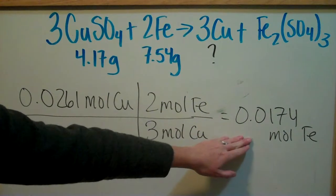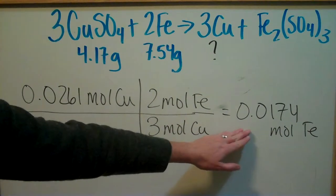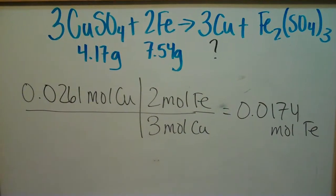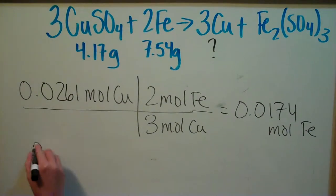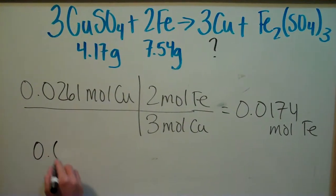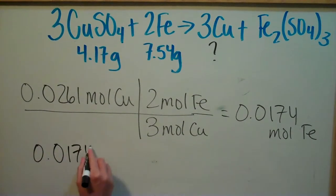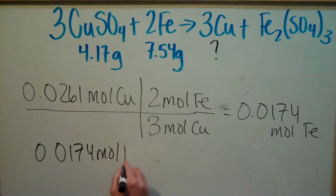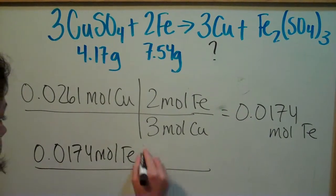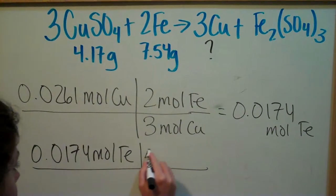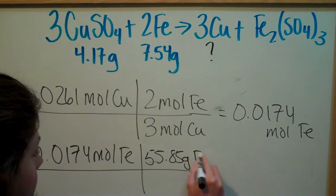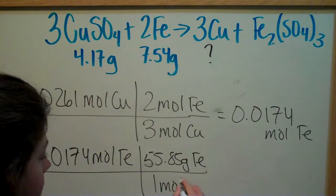So now what we need to do is take these moles of iron and turn them into grams. And we've done this 1,000 times by using the atomic mass. So here we go. We're going to bring this back: 0.0174 moles of iron. And we know from the periodic table that there are 55.85 grams of iron in one mole of iron.